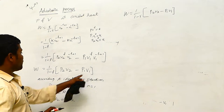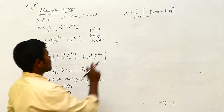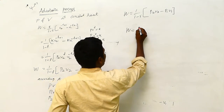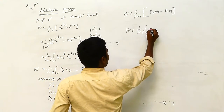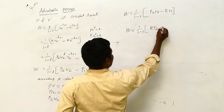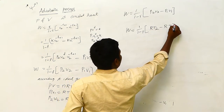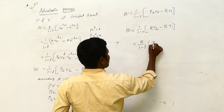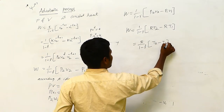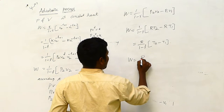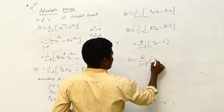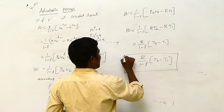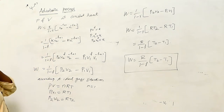P2V2 we know already, P1V1 we know already. P1V1 is equal to RT1, P2V2 is equal to RT2. W is equal to 1 by 1 minus gamma. Taking common, finally we got the answer T2 minus T1. This is our answer — this is the adiabatic derivation.